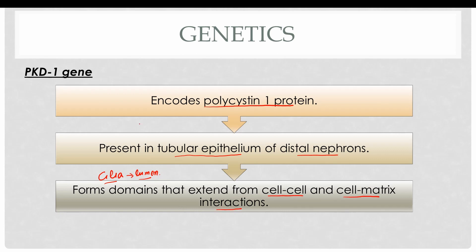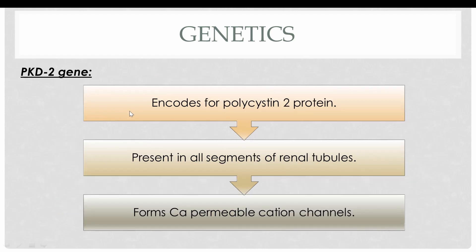In almost 85 percent of cases of adult polycystic kidney disease, the PKD1 gene is mutated. The PKD2 gene encodes polycystin 2 protein, which is present in all segments of the renal tubules, unlike polycystin 1. Polycystin 2 forms calcium-permeable cation channels that cause influx of calcium in healthy tubular epithelium.